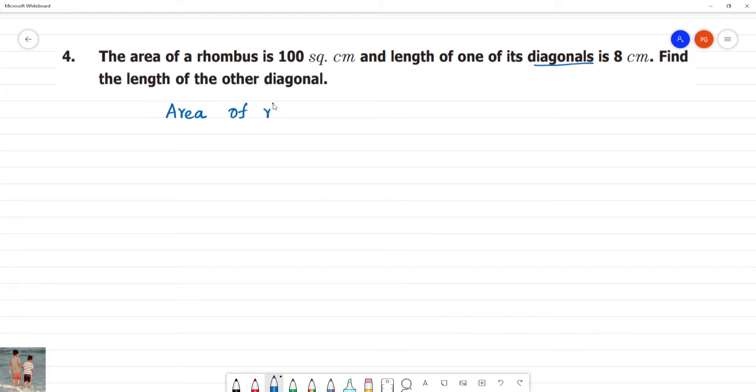Area of rhombus when diagonal is given equals half into diagonal 1 multiplied by diagonal 2, in square units.